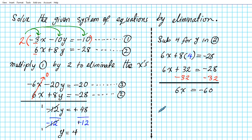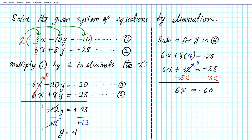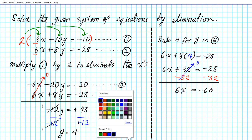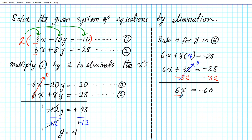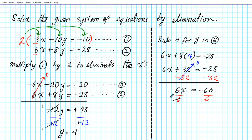That gives us 6x equals negative 60, since negative 28 minus 32 gives negative 60, and the 32's add up to 0. To finish, we divide both sides by the coefficient of x, which is 6. The inverse of multiplication is division, so 6 divides out on the left. We get x equals negative 60 over 6, which is negative 10. When you divide numbers with different signs you always get a negative. So our solution to this system of equations is x equals negative 10, y equals 4.